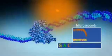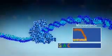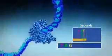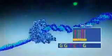After incorporation, the label is clipped off and diffuses away. The whole process repeats, creating sequential bursts of light corresponding to the different nucleotides. These are recorded, thus building the DNA sequence.